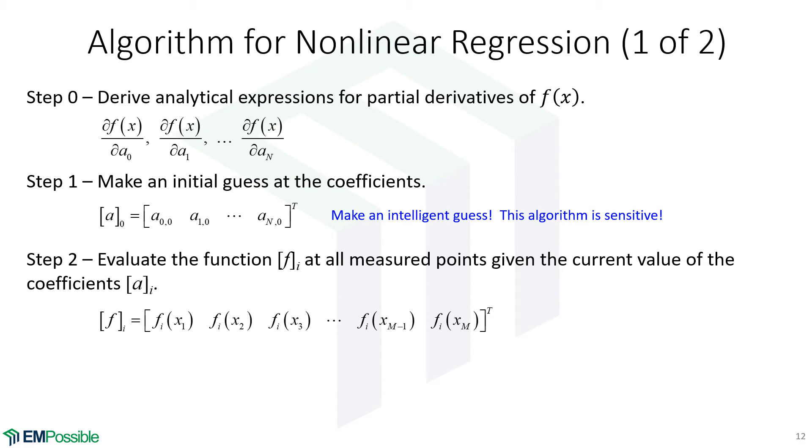Then once we have an initial guess at our curve fit parameters, we will evaluate the function using those curve fit parameters at our measured values of X. So we have our fit values. Given the fit values, we can calculate this error term, D. That's our measured values minus the fit values.